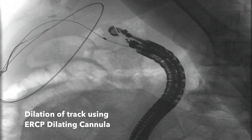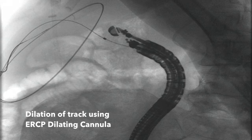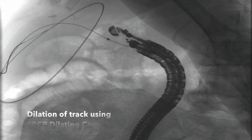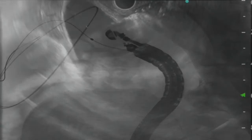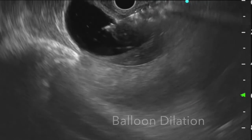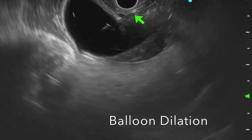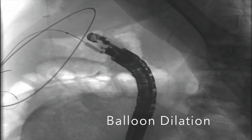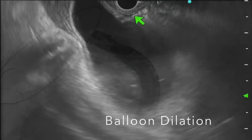The tract is dilated first with a taper tip catheter and then further dilated with a 4mm balloon. Once the dilation is complete,